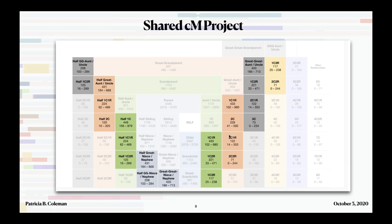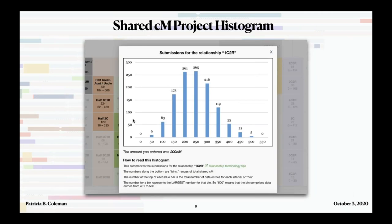A nice feature of this table is you can also get a histogram. If I click on one of the darker numbers, the grayed-out part of the table is not a proper probability at 200 centimorgans. I can get the histogram and see that 200 centimorgans has a pretty good chance of being a first cousin second twice removed. If the number falls way at the low or high end, I would look at a different histogram to find a better result.